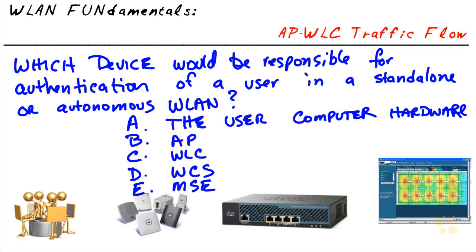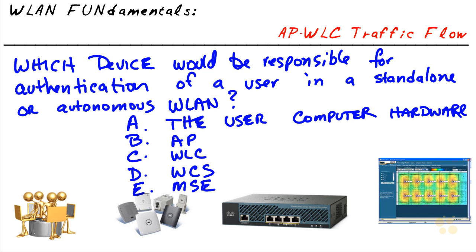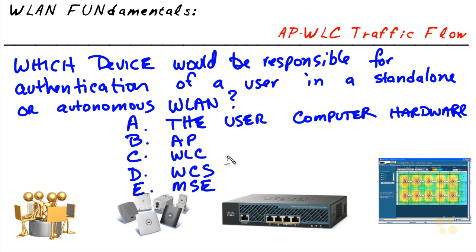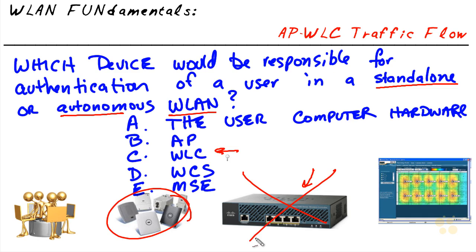Pop quiz: which device is responsible for authentication in a standalone or autonomous wireless local area network? The question is a bit tricky — in our discussion, the wireless LAN controller handles authentication and authorization via Split Mac. However, a standalone or autonomous WLAN implies there is no controller involved. As a result, it's the access point on its own that makes decisions regarding user authentication — it has no wireless LAN controller to go to.